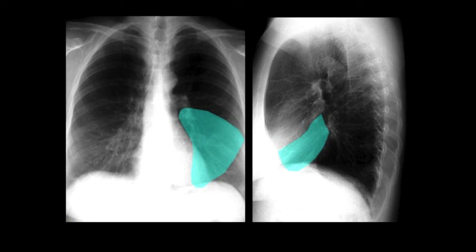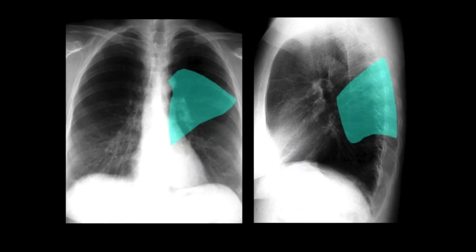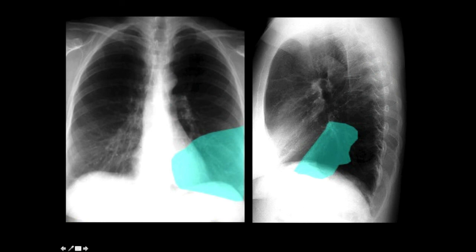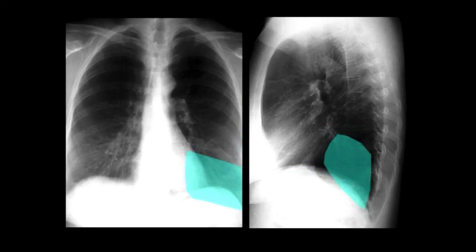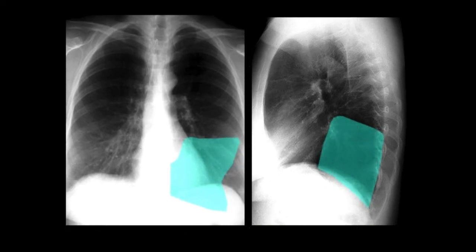That leaves four segments for the left lower lobe. The superior segment of the left lower lobe is almost a mirror image of the right side. Then we have a rather large segment which is anterior and medial — the anterior-medial basal segment, another combination, accounting for the other lost segment. Then there are two remaining basal segments: the lateral basal and the posterior basal segment. The point is to emphasize the importance of having both PA and lateral views to localize abnormalities.